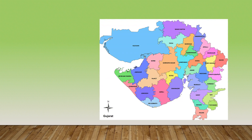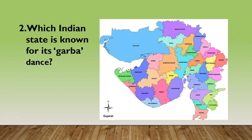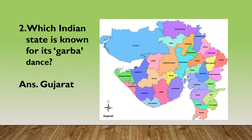Now, see the picture of this state, children. This is Gujarat. Which Indian state is known for its Garba dance? Yes, it is Gujarat. Other dances are also there like Bhavai, Dandiya, Padhar, Tipani, and Modhera, but Garba is the main dance. Gujarat has 33 districts and is the fifth largest state in area. The capital of Gujarat is Gandhinagar. The state animal is Asiatic Lion, state bird is Greater Flamingo, and state flower is Marigold.